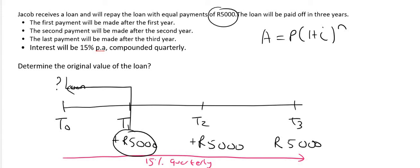So you could think of it as A equals 5,000 Rand, but you want to know what the starting amount is. You don't know what P is. Then you could go 1 plus 0.15 over 4 because it's quarterly. And then if you're going from T1 back to T0, that's only one year, so that's going to be to the power of 4.